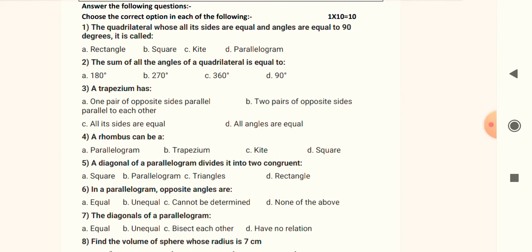Question number one: the quadrilateral whose all sides are equal and angles are equal to 90 degrees is called square, parallelogram, kite, or rectangle. Friends, let's see the questions very carefully.